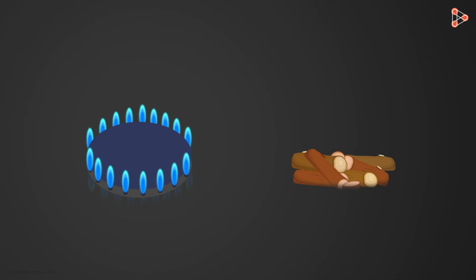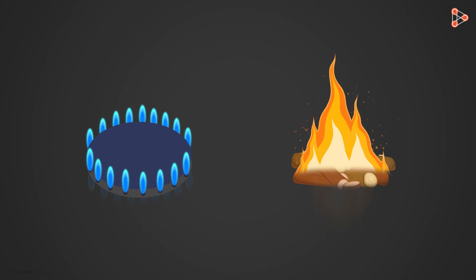We ended the previous video with a question. Why does methane give us a blue flame without any soot? And why does wood burn with a yellow flame with soot? Let us try finding out the answers.